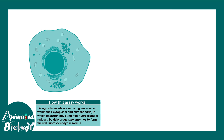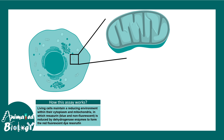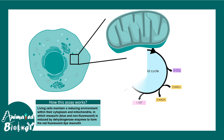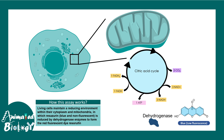So the question is: how does this assay work? If a cell is viable, its mitochondria would be functional. The mitochondria would produce NADH, ATP, and FADH. In this particular assay, a dye — resazurin — is added to a cell culture. It is blue in color and non-fluorescent. With the help of mitochondrial dehydrogenase enzyme and NADH produced from the citric acid cycle, this dye is reduced into a pink, highly fluorescent form.